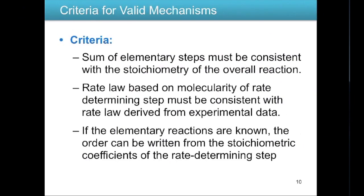The criteria for a valid mechanism are: first, the sum of the elementary steps must be consistent with the stoichiometry of the overall reaction. Second, the rate law must be based on the molecularity of the rate determining step — both the components present and the exponents must match the stoichiometry. If the elementary reactions are known, the reaction order can be written directly from the stoichiometric coefficients of the rate determining step.